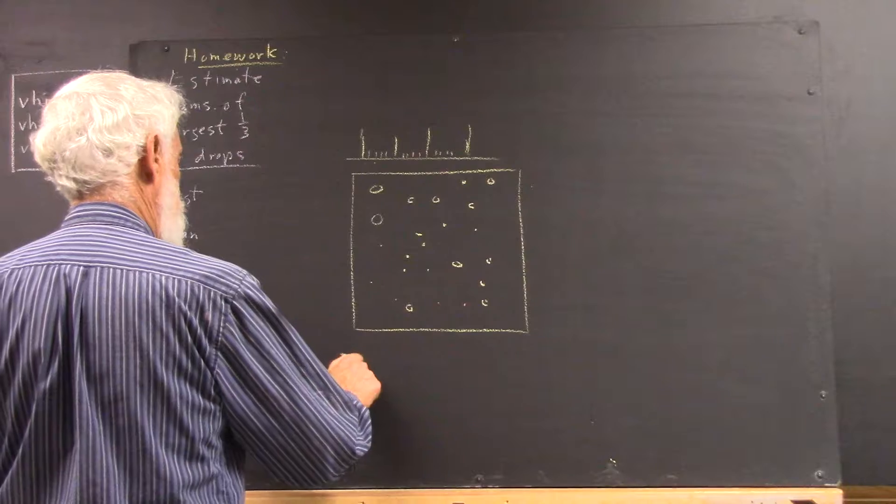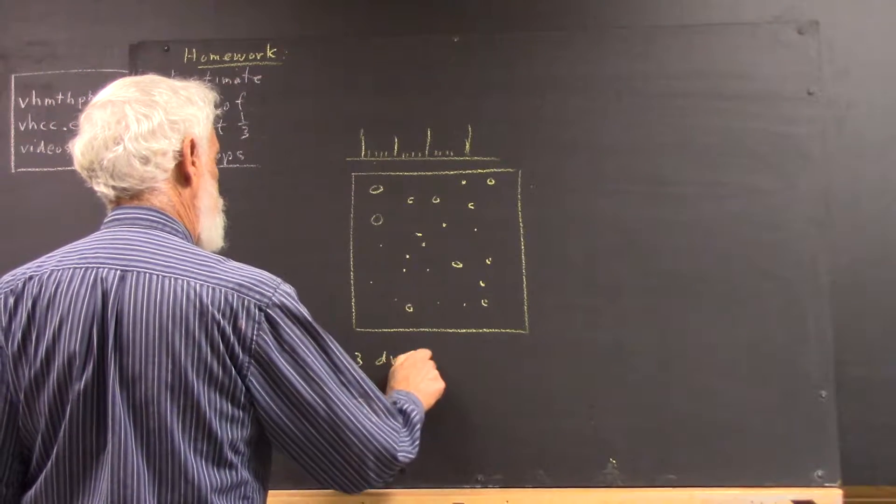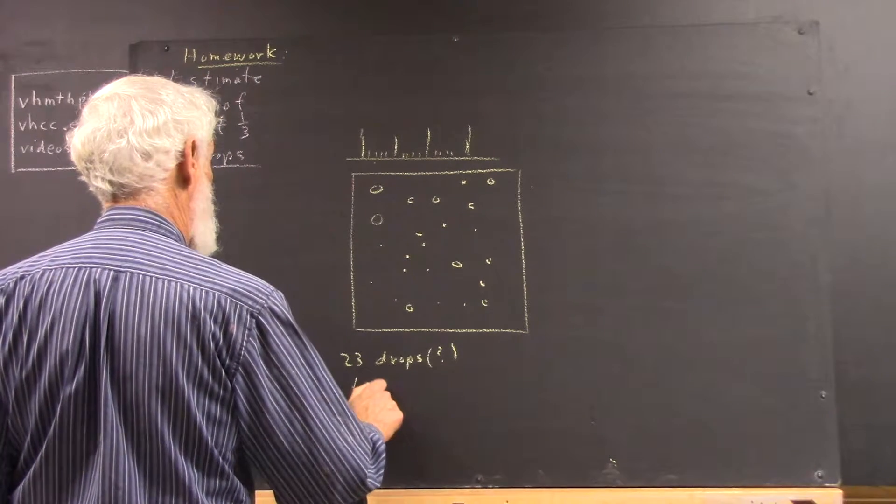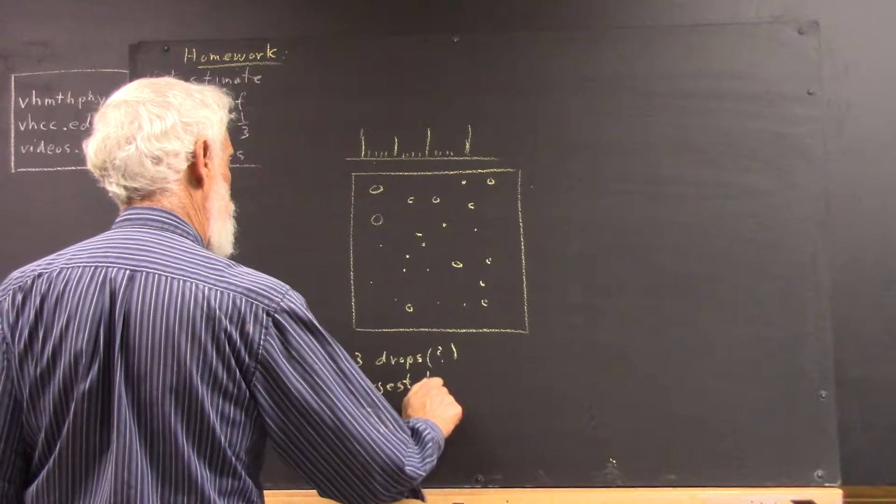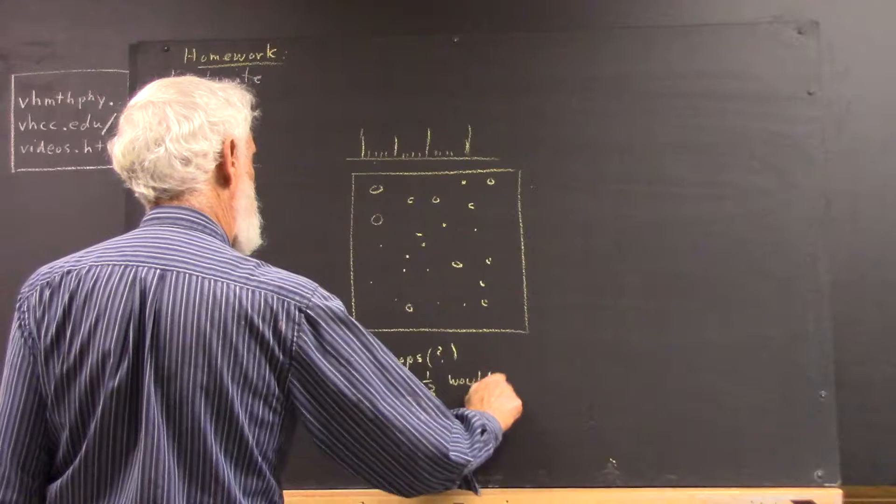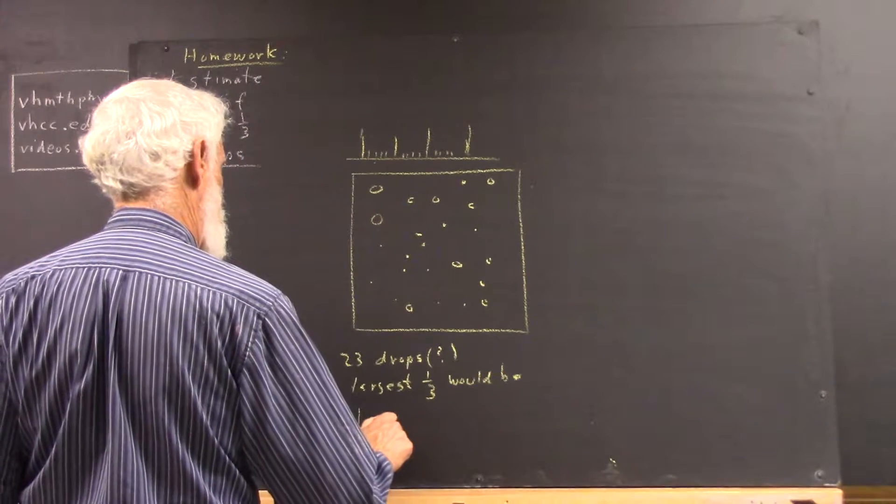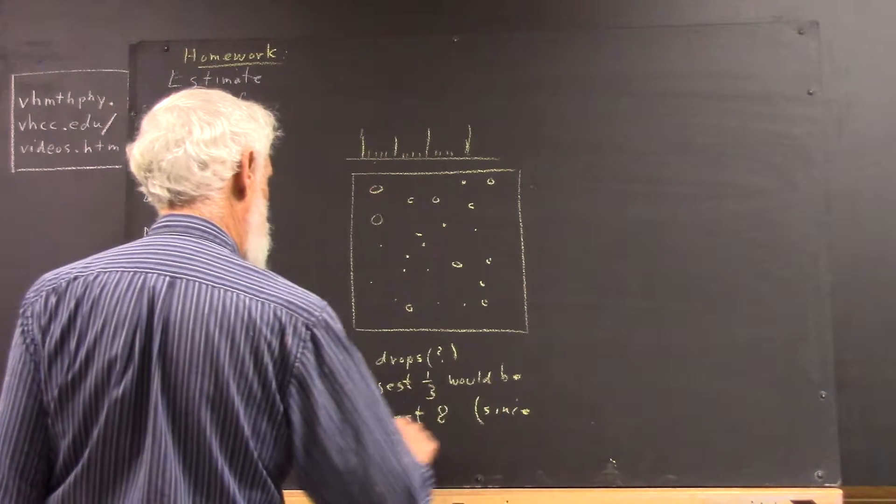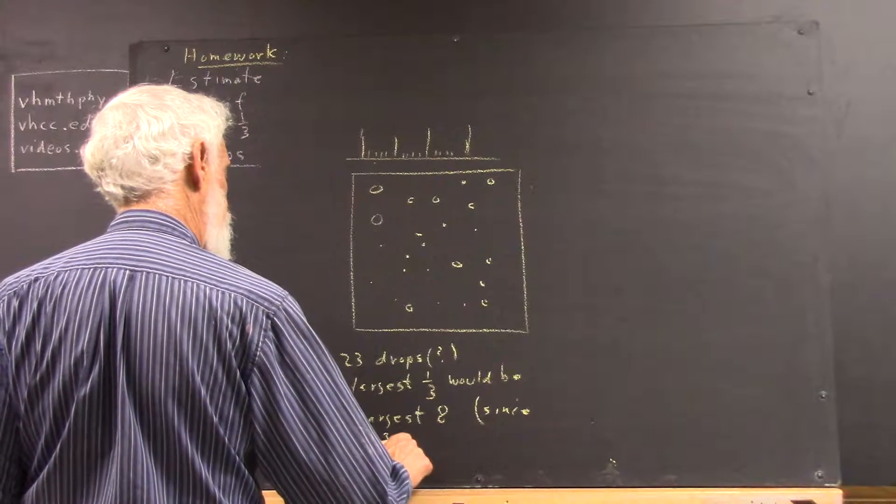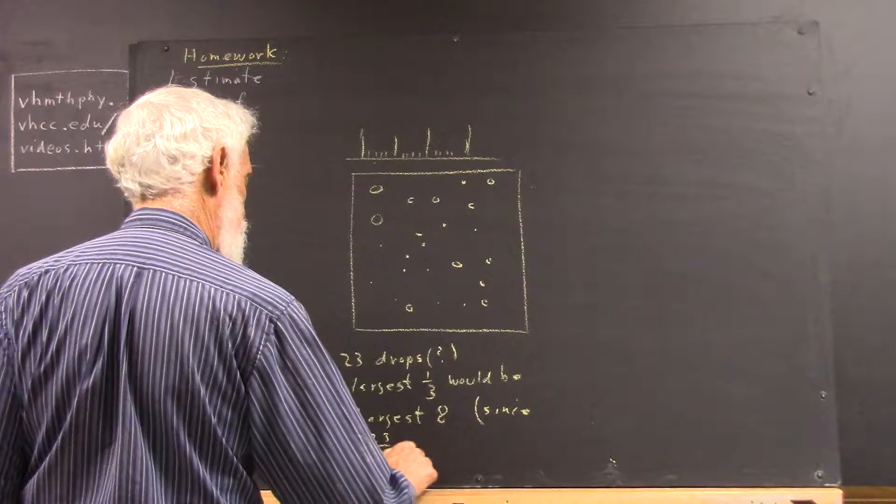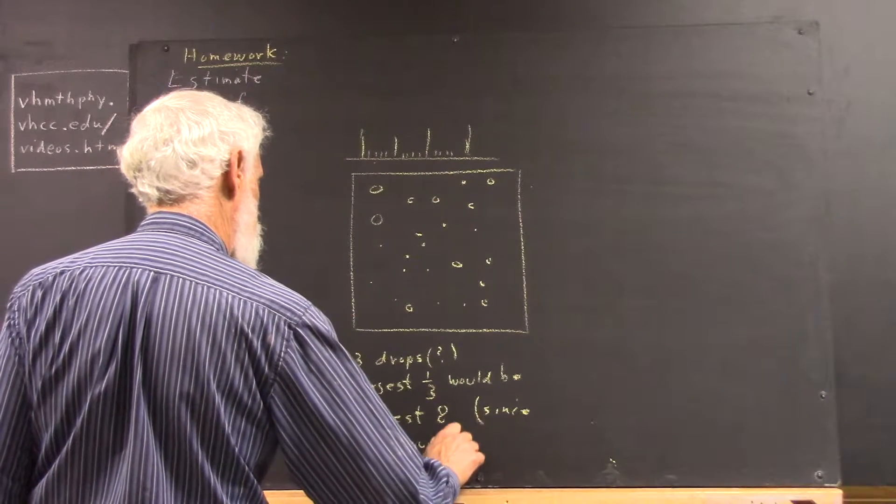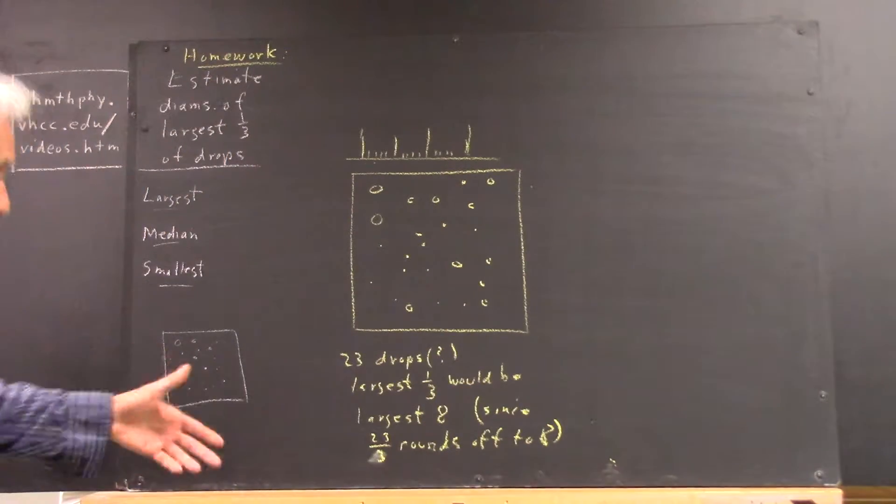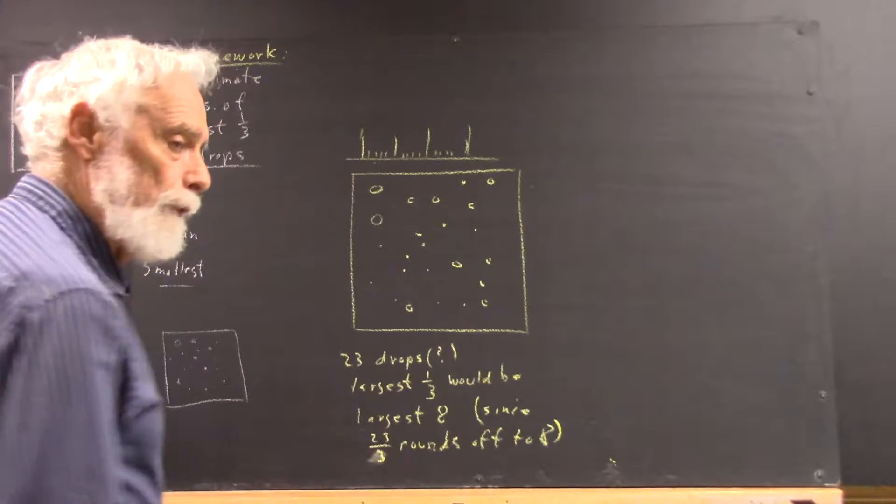Okay, so I'm not sure I didn't count someone twice. But the largest third would be the largest eighth. Since 23 over 3, rounds off to 8. 3 goes into 24 eight times. So we're looking for the eight largest drops.